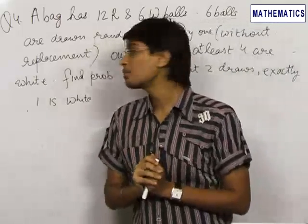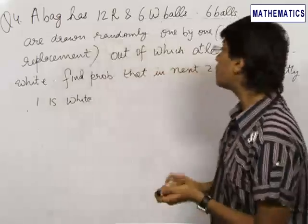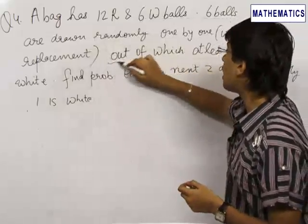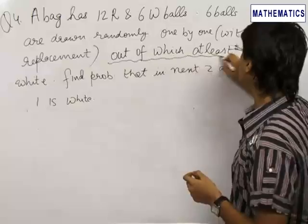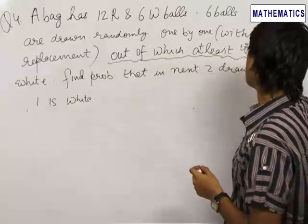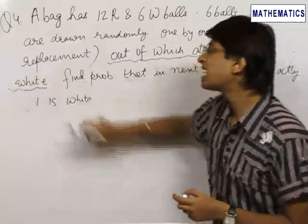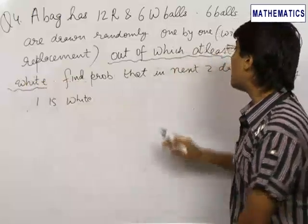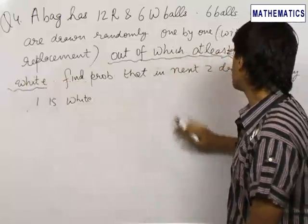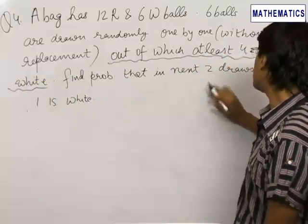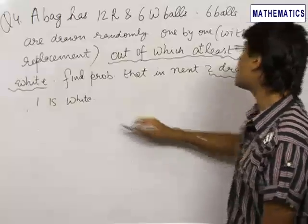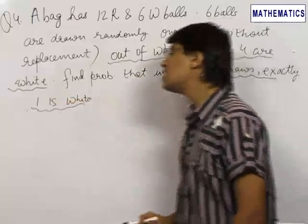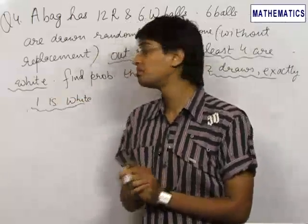In this kind of problem, the language is the most important part. We are given the condition that out of the 6 balls drawn, at least 4 are white. We are given one condition and asked for the probability of a certain other event — exactly one white ball in the next 2 draws. In these kinds of problems, we apply Bayes theorem.